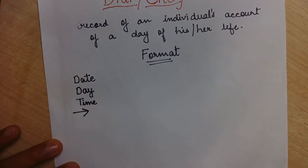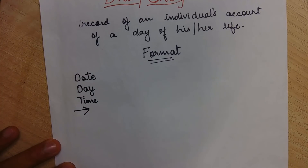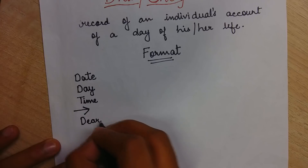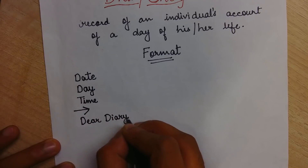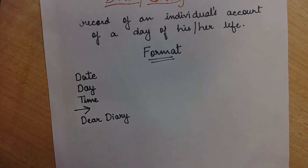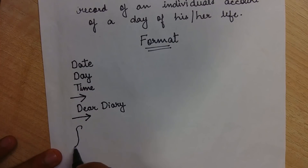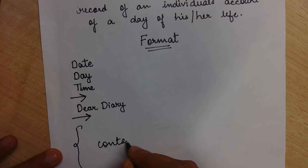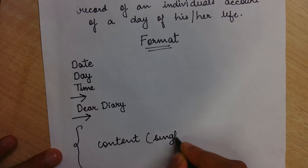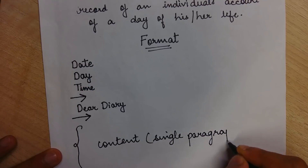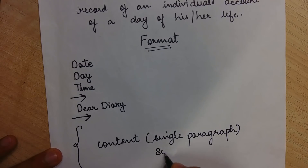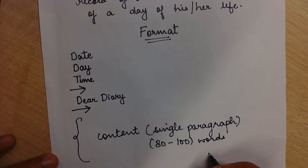After that you have to leave a line, and then you have to write a salutation — Dear Diary. The diary is acting like your friend. After you leave the line, the main content follows. Your content will be a single paragraph; you don't have to change paragraphs. Where your content is finished, leave a line and just write your name.